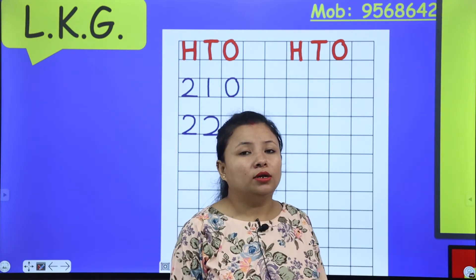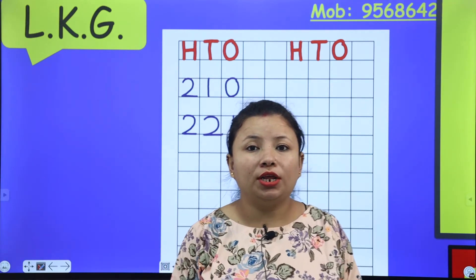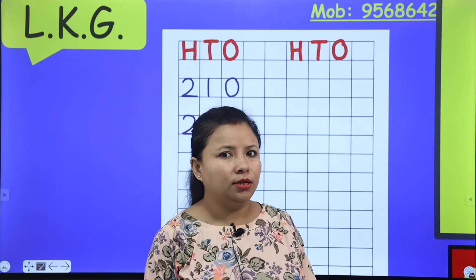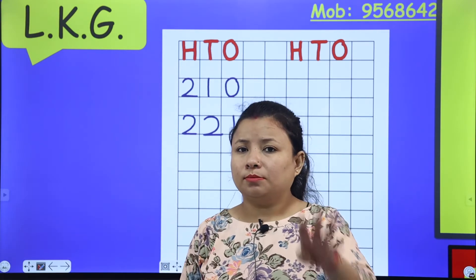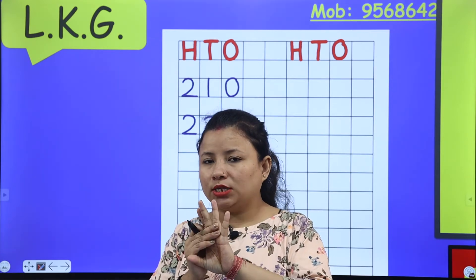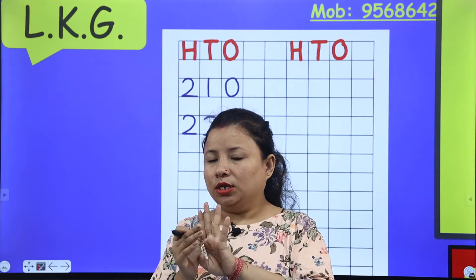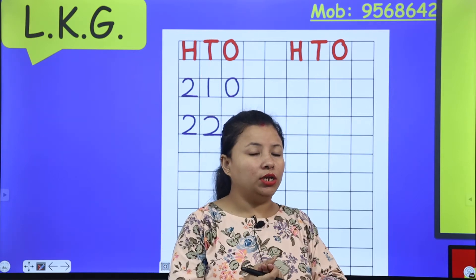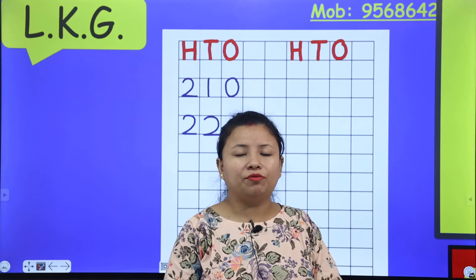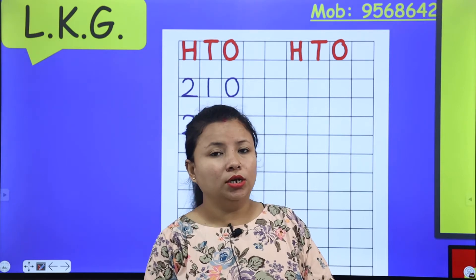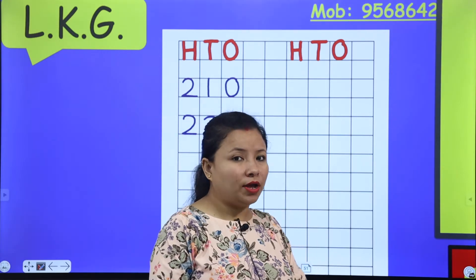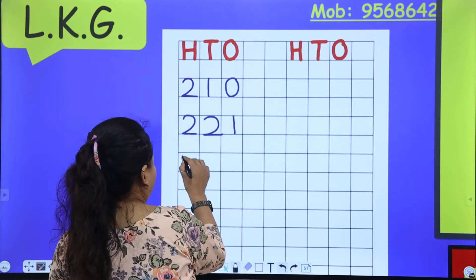The third number is two hundred forty-five. Two hundred forty — forty means four in the tens place. So two hundred forty-five: we write two hundred, then forty which means four, and five — two hundred forty-five, 245.